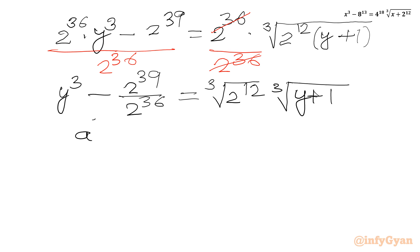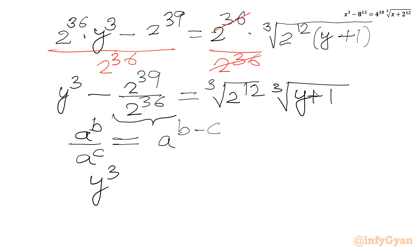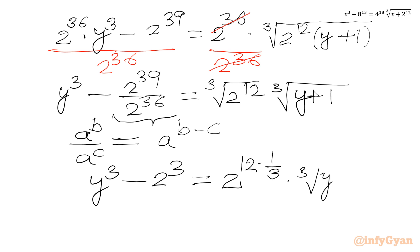Using the property a^b / a^c = a^(b−c), we write 2^(39−36) = 2³. So the equation becomes y³ − 2³ = 2^(12×(1/3)) × ∛(y+1), and since ∛(2^12) = 2^4, we get y³ − 8 = 2^4 × ∛(y+1).